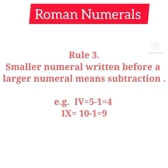Rule three: a smaller numeral written before a larger numeral means subtraction. If we write a smaller numeral before the larger numeral, we have to do subtraction. For example, IV — I equals one and V equals five, but since I is before V, we do subtraction: five minus one equals four. Similarly, IX — I equals one and X equals ten, so ten minus one equals nine.